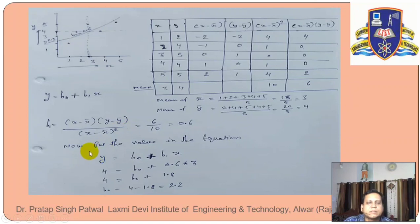Now we put the values in the equation y equal to b0 plus b1 x. The y mean value is 4, x mean value is 3, and b1 value is 0.6. Let's solve this to find b0. b0 equals 4 minus 1.8, which equals 2.2. Now if we plot this value, here is 2.2.